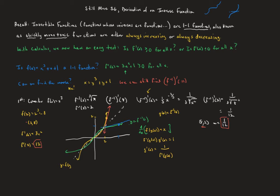To find g′(8) — the derivative of the inverse at 8 — we compute 1 / f′(g(8)). Now g(8) is f⁻¹(8). Since f⁻¹(8) = 2, this becomes 1 / f′(2). We already found f′(2) = 12, so the derivative of the inverse at 8 is 1/12 — confirming what we found directly.